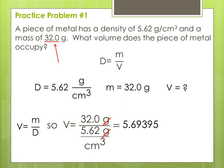The trailing zero is significant because the number contains a decimal point. So we have to go back down to our calculated answer and count starting from the left. Our third significant digit is the 9, and the number immediately following it is a 3. The rule is 4 and below, you let it go. So our answer will round to 5.69 — the 9 is the third significant digit.